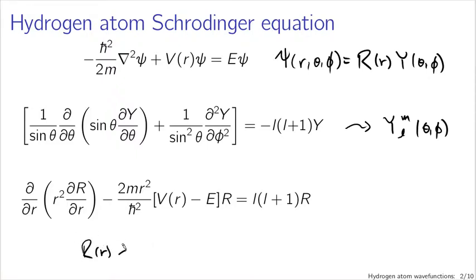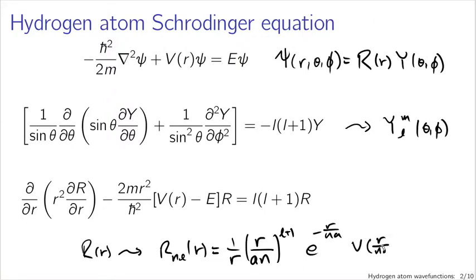Our capital R of r function, we had to make some changes of variables, but what we got in the end was R_nl as a function of r. As a change of variables, we ended up with a 1 over r simplifying things to write things with this 1 over r factored out. And then factoring out asymptotic forms, before we did a power series solution, we get r over a_n raised to the l plus 1 power times e to the minus r over na. Those were our asymptotic forms. And then we ended up with some polynomial of r over na. These polynomials ended up being associated Laguerre polynomials after we did a power series solution.